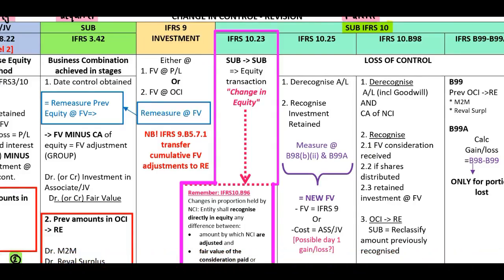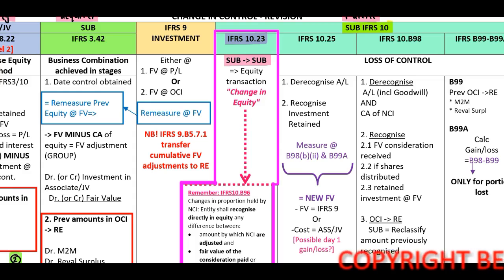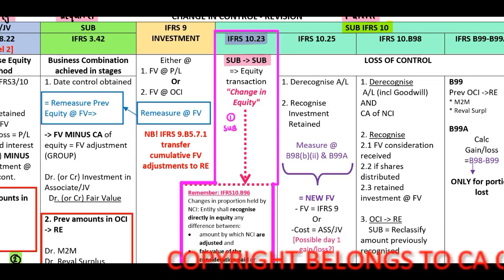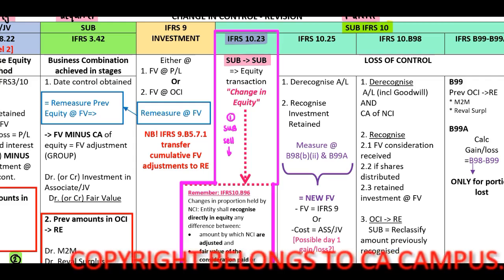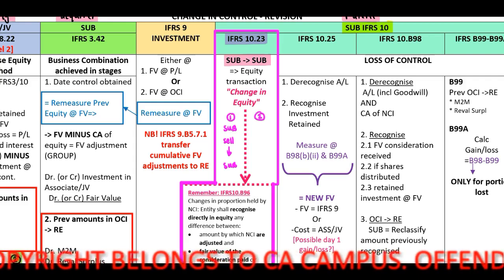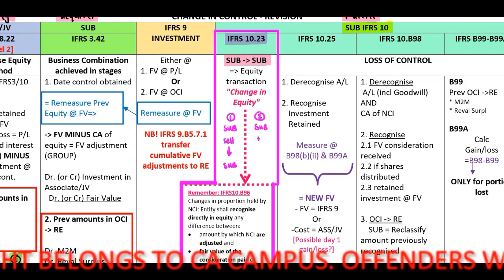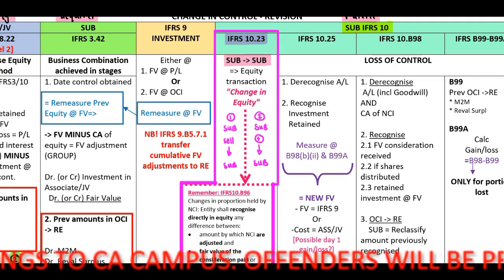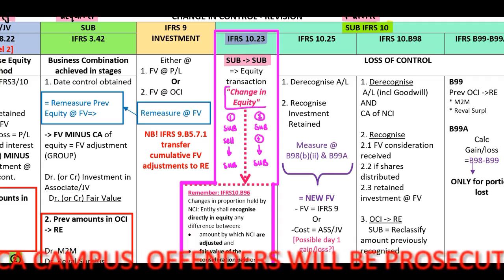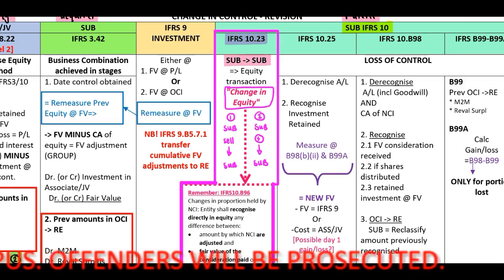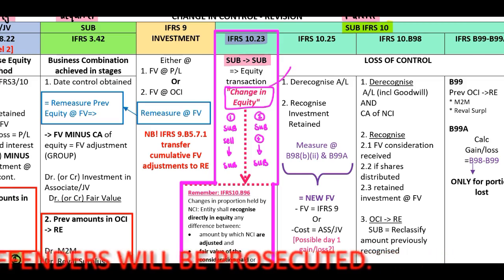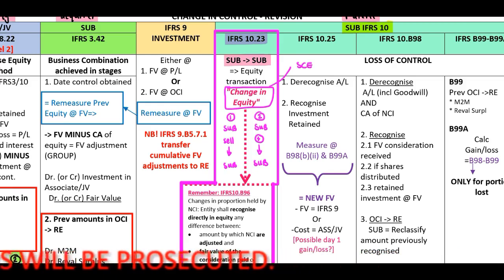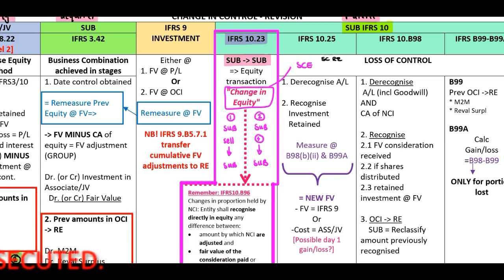We are looking at IFRS 10 paragraph 23, where we have a subsidiary that will remain a subsidiary. The standard indicates that the entity will, for example, sell a portion of shares but this will still be a subsidiary, or scenario two where the entity will purchase additional shares and it will still remain a subsidiary. We recognize a change in equity transaction — a change in ownership — included in our statement of changes in equity. You will have an additional column: share capital, retained earnings, revaluation surplus, and now a change in ownership column.